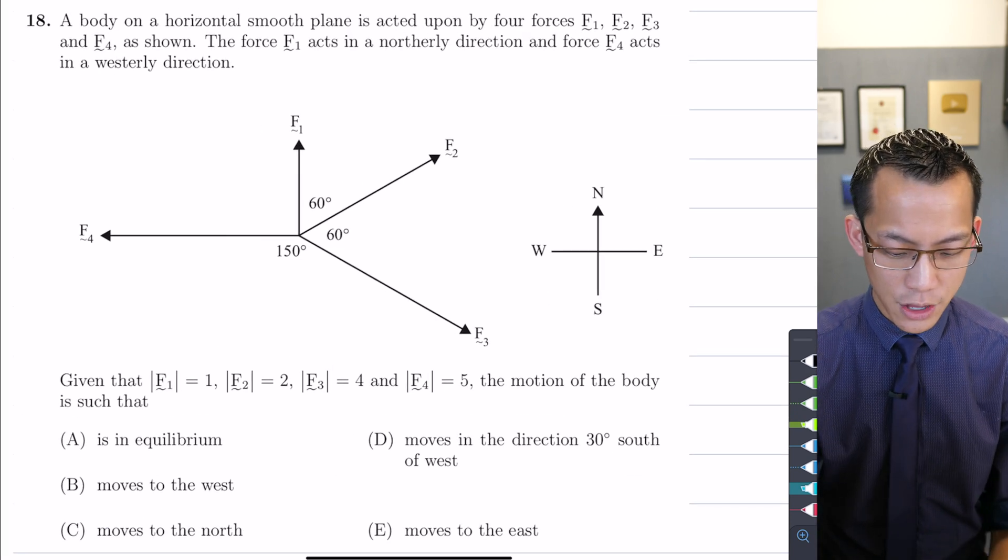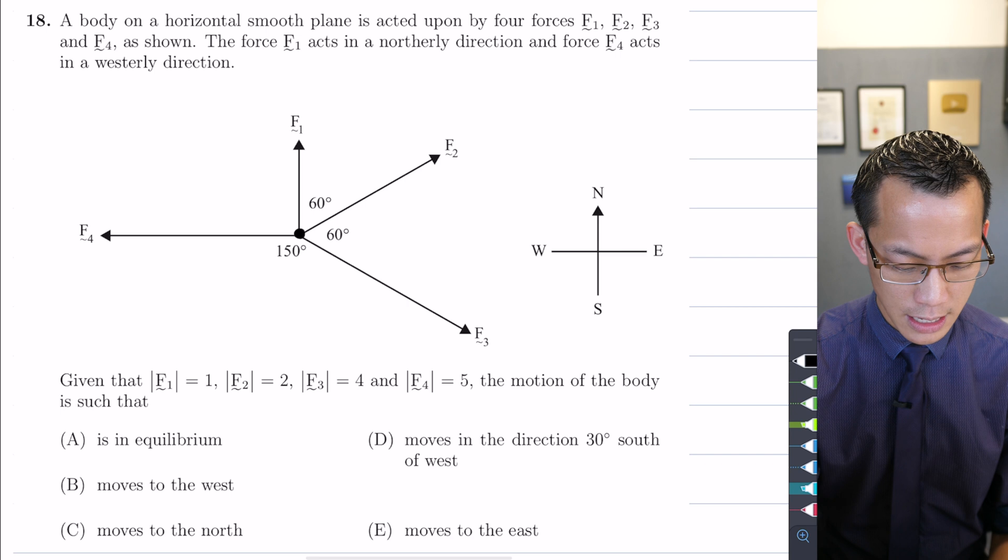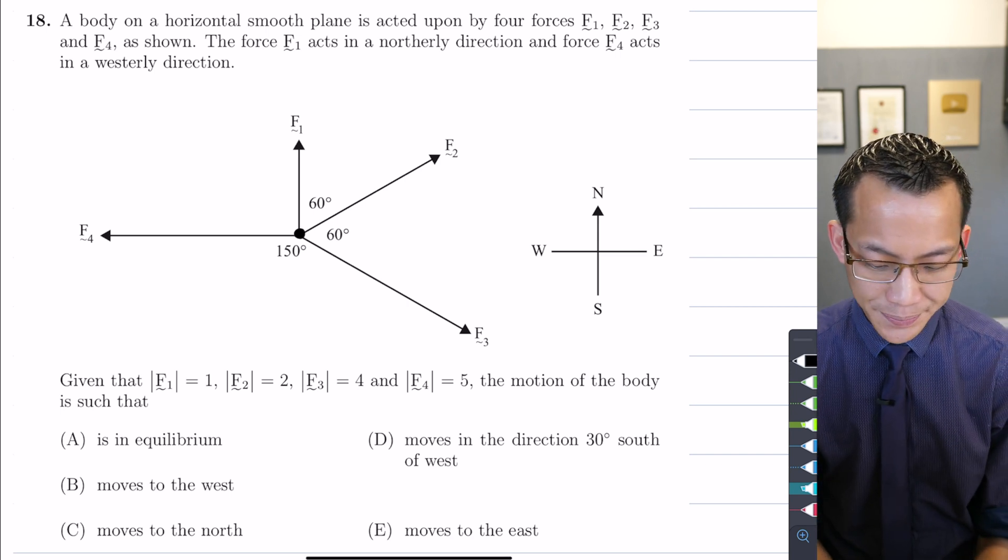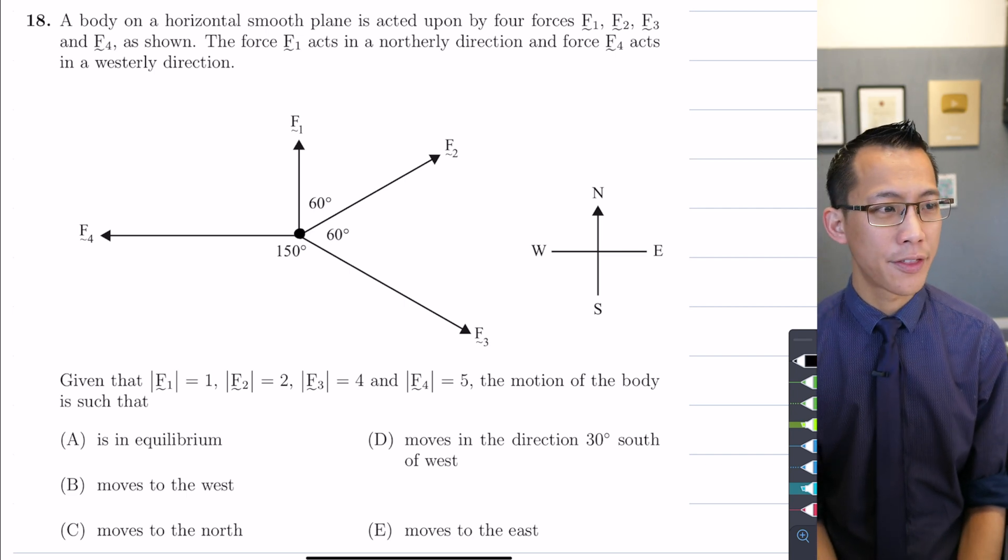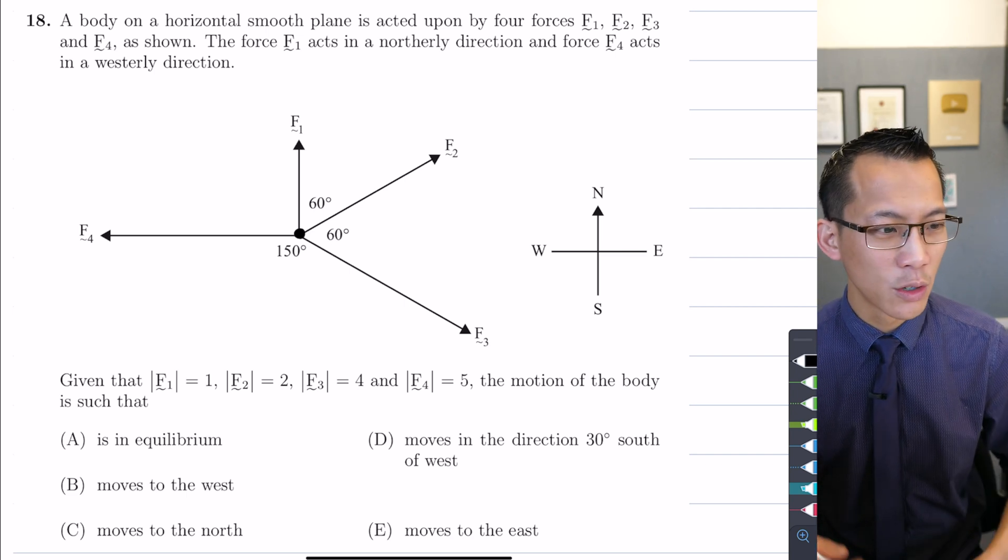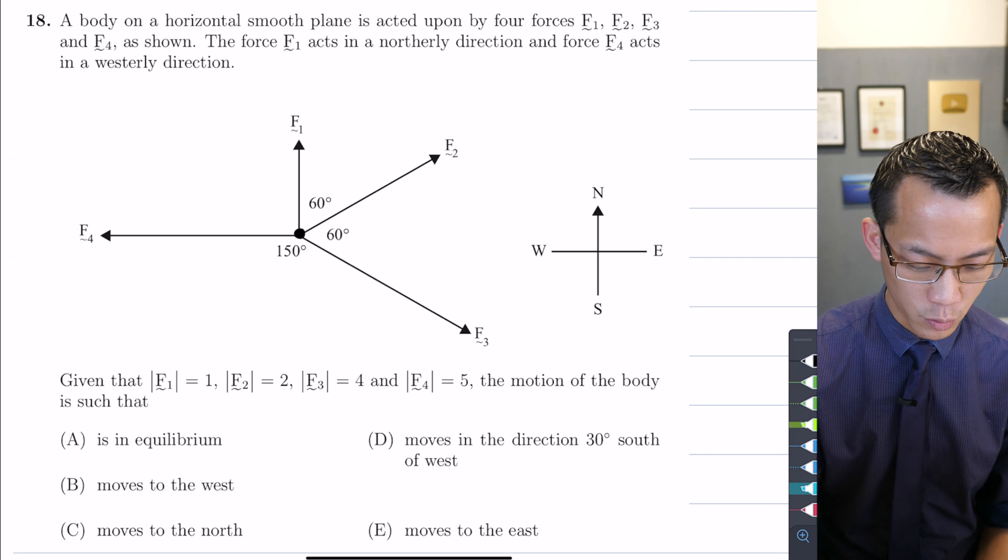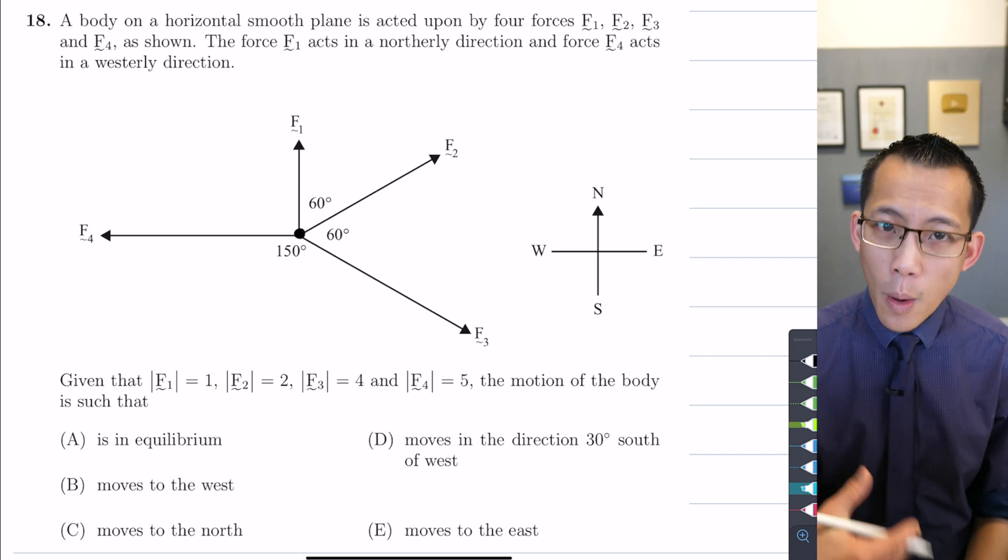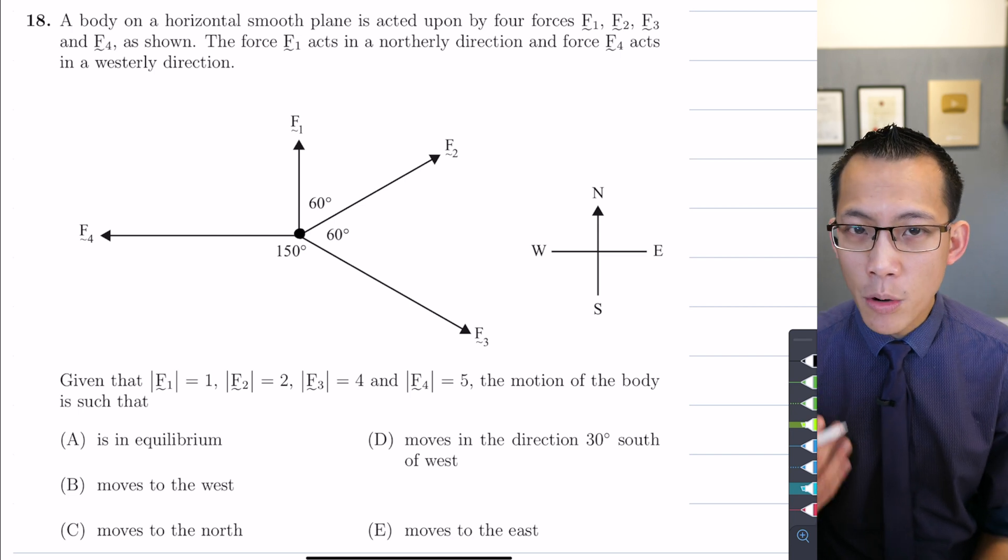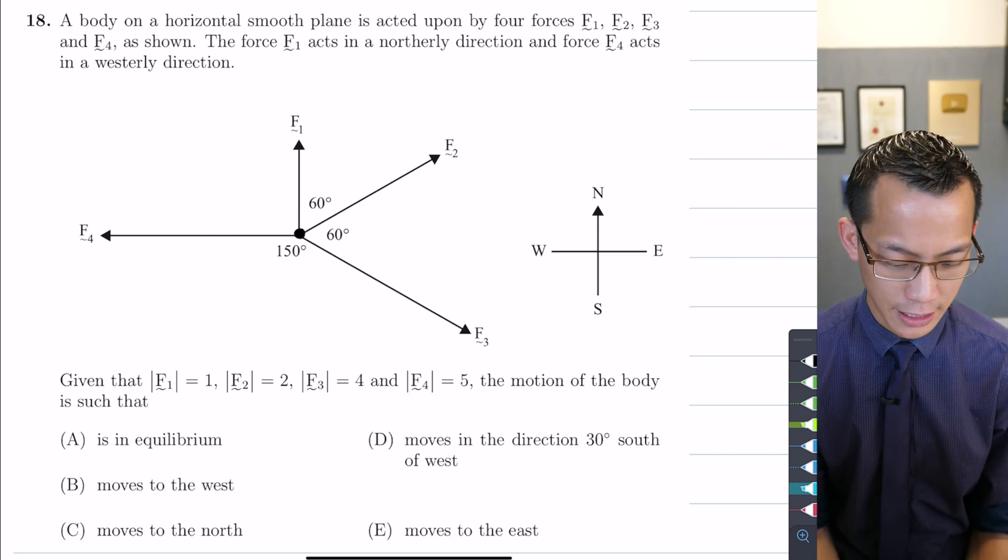You've got this situation here where you have this body, and it's sort of here in the center and we can call that the origin. It's being acted on by the four forces F1, F2, F3, and F4, and it tells you the magnitudes of each of those as well: 1, 2, 4, and 5. What will be the resultant motion of the body? What direction will the forces be pushing it in?